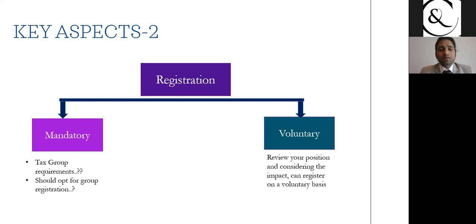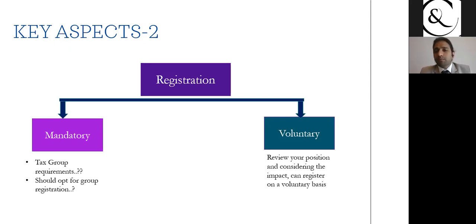While registering on a mandatory basis, you can also look out for tax group registration, because if you register as a tax group there are many inherent advantages — though you need to ensure you fulfill the criteria for group registration. As per the law, there are four different phases for VAT implementation; companies with turnover less than one million rials are not required on a mandatory basis to register in the first phase.